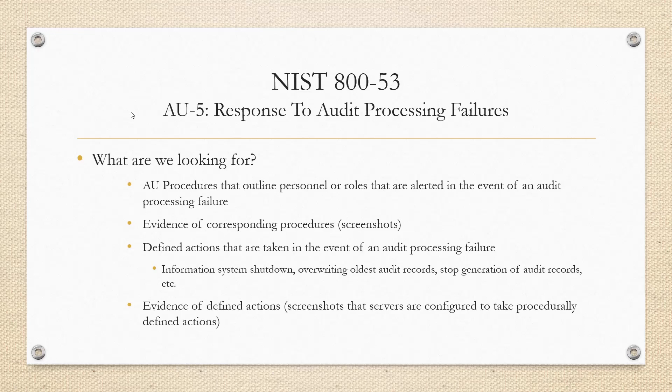The second part of this is defined actions that are taken in the event of an audit processing failure. Whether that action is an information system shutdown, overwriting your oldest audit records just to maintain audit capturing, or you stop generating audit records altogether based on the specific scenario. Same thing applies here — we're going to want to see evidence of that, so screenshots that your servers are configured to do exactly what your procedures outline.